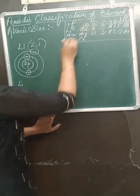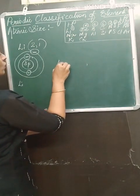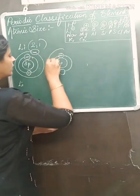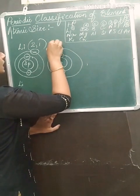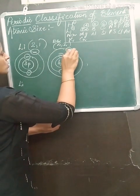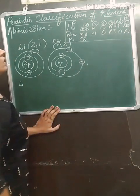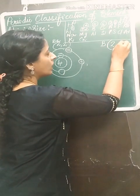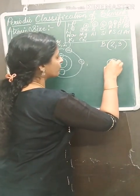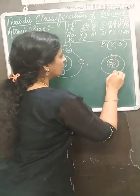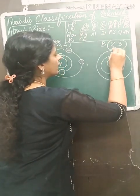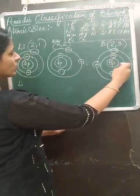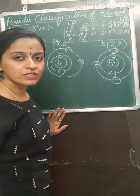Now let us talk about beryllium. Beryllium has 4 protons in the nucleus. The first shell has 2 electrons and the second shell has 2 electrons — electronic configuration 2, 2. Then boron: electronic configuration 2, 3 — nucleus with 5 protons, first shell 2 electrons, second shell 3 electrons. And for carbon, the configuration is 2, 4 — that is 4 electrons in the outermost shell.